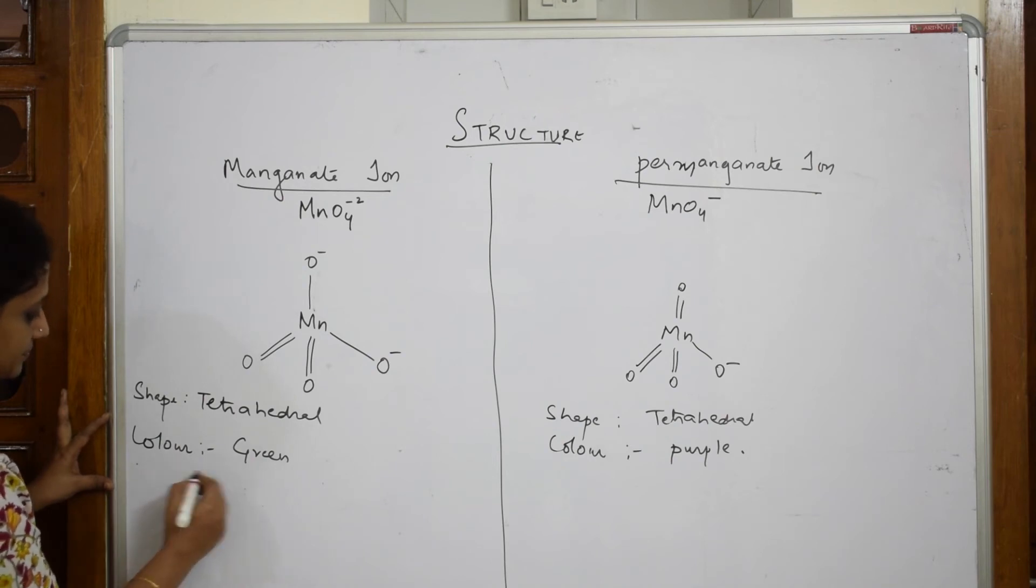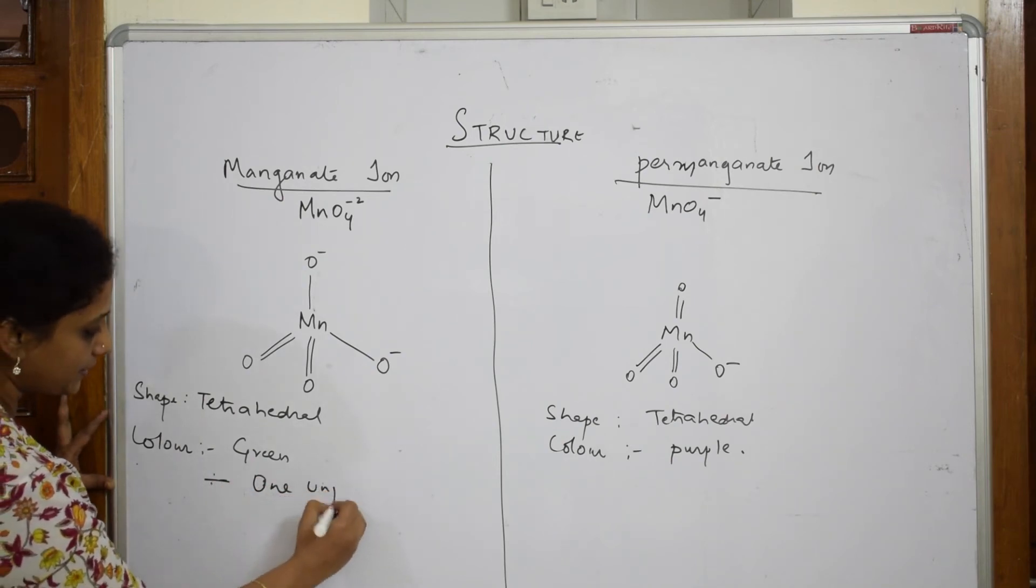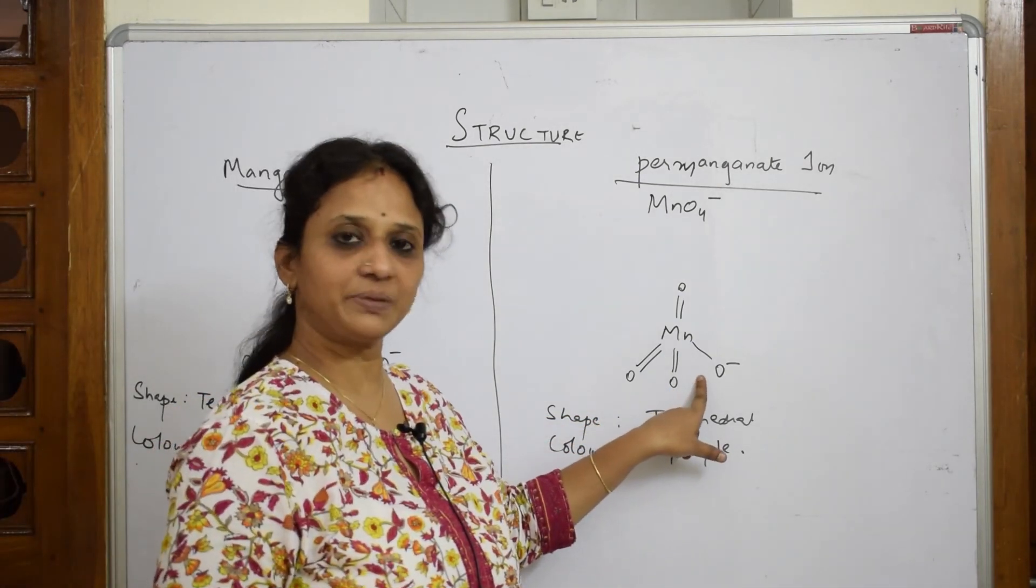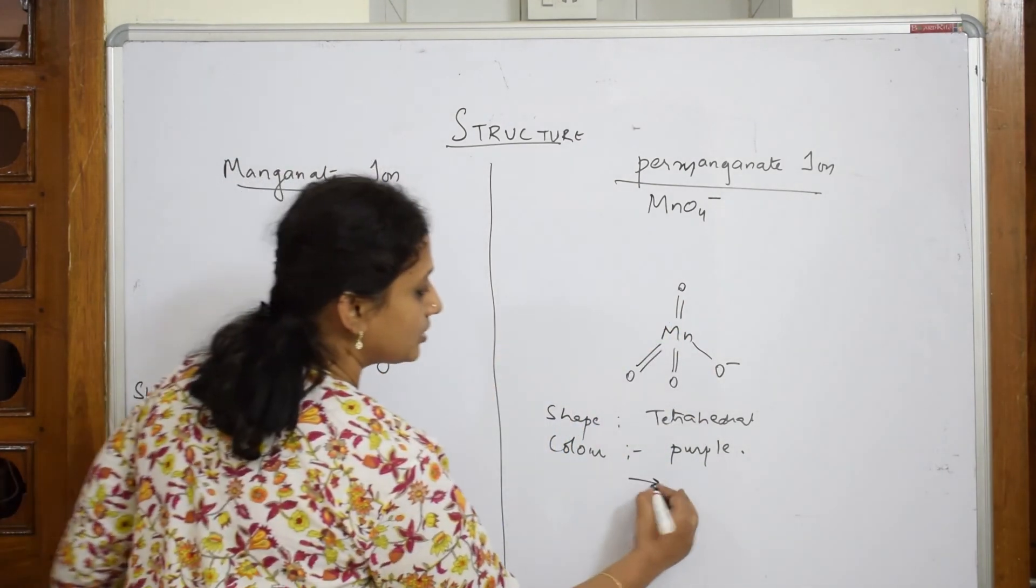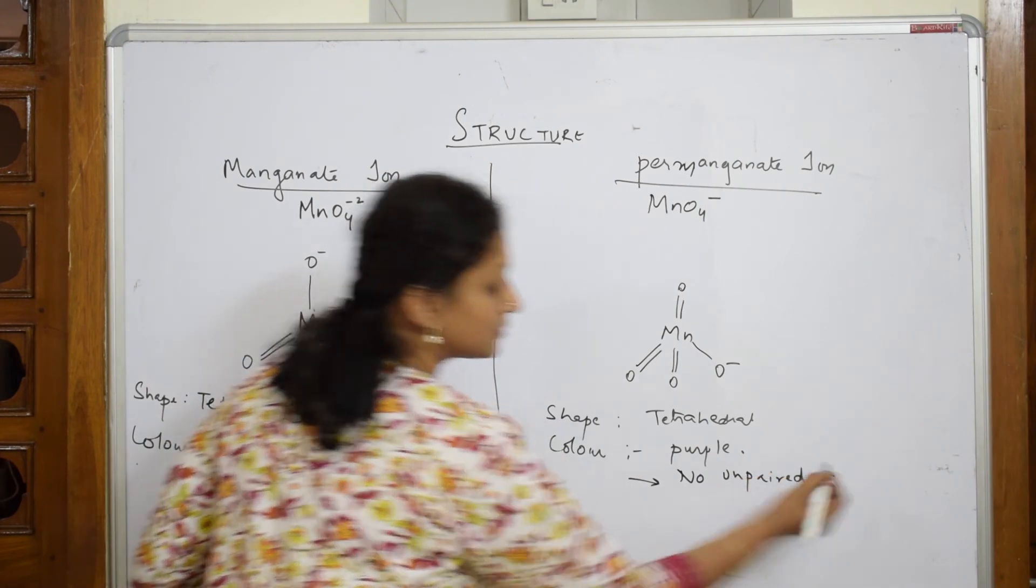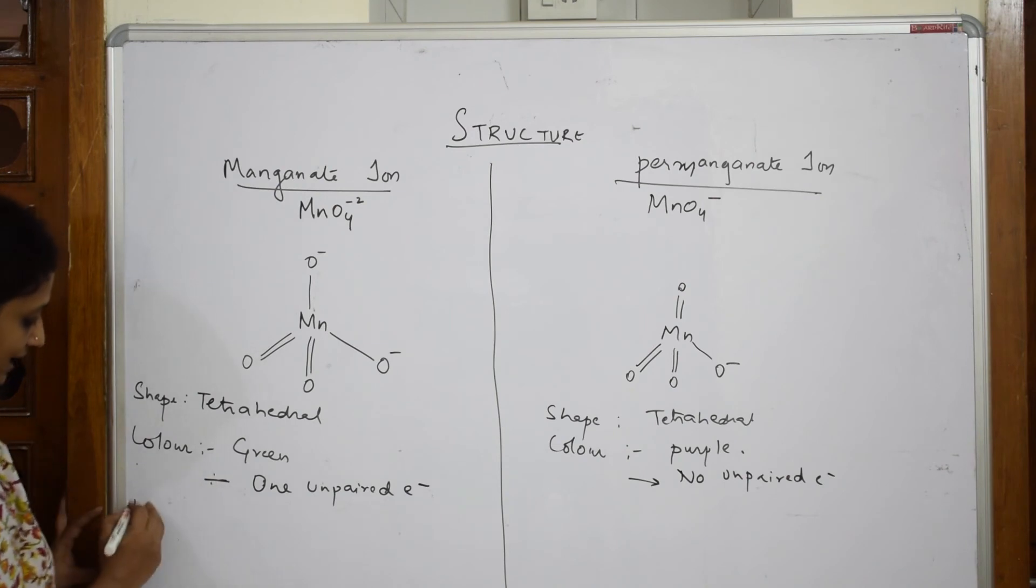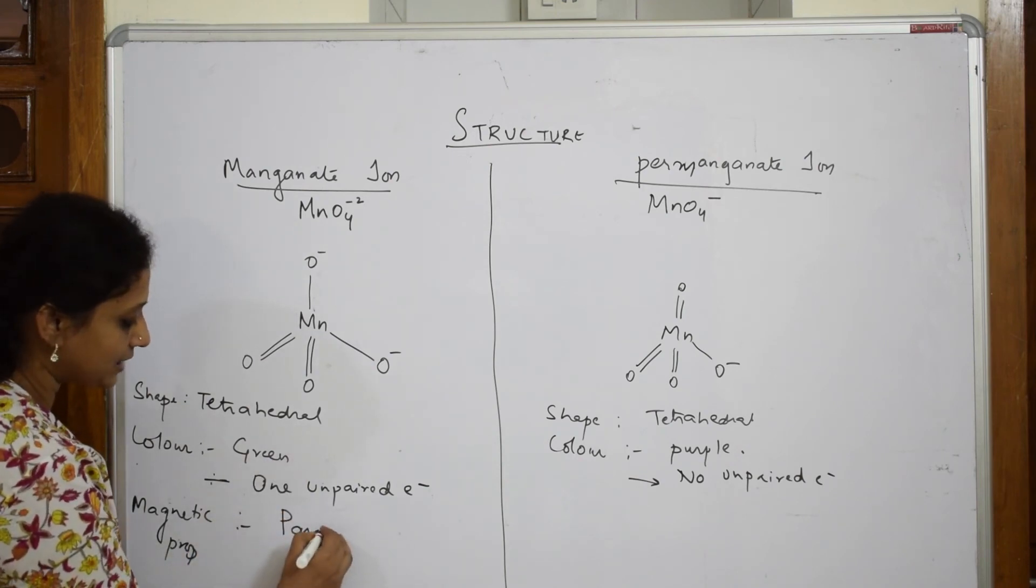Important. No unpaired electron in permanganate. In manganate, when you have one unpaired electron, what is the magnetic property? When there is unpaired electron, we call it paramagnetic in nature.